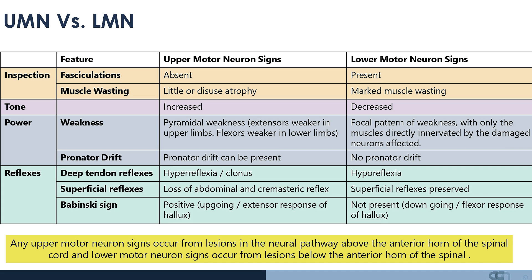The reflexes also show characteristic changes. The deep tendon reflexes become hyperreflexic with clonus in upper motor neuron conditions, whereas in lower motor neuron conditions the deep tendon reflexes become hyporeflexic. The superficial reflexes are lost in upper motor neuron conditions and preserved in lower motor neuron conditions. An upper motor neuron lesion results in an up-going or extensor response of the hallux, whereas a down-going or equivocal plantar response occurs in a lower motor neuron condition. Any lesion above the anterior horn results in upper motor neuron signs; any lesion from or after the anterior horn results in lower motor neuron signs.